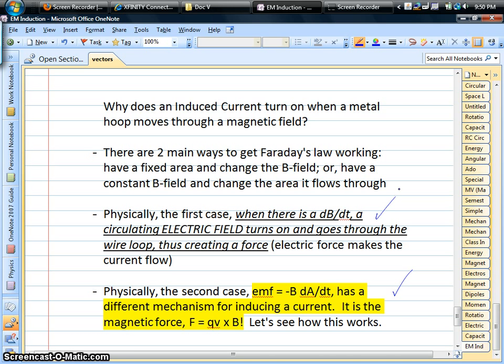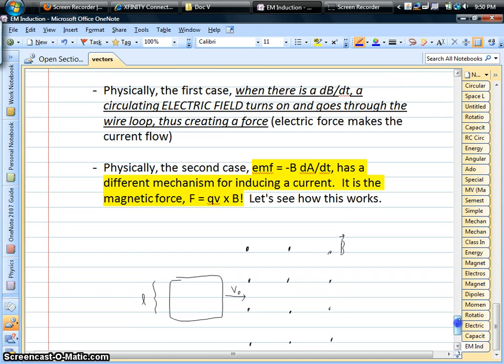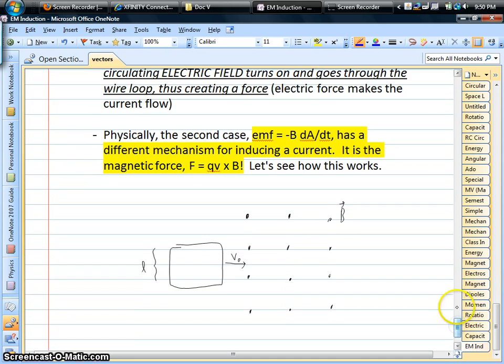But what about the case where the magnetic field is constant? You don't have an induced electric field that turns on. There's got to be another reason. Okay, so the reason is an old friend in magnetism, QV cross B. A magnetic force is responsible for turning on the current.